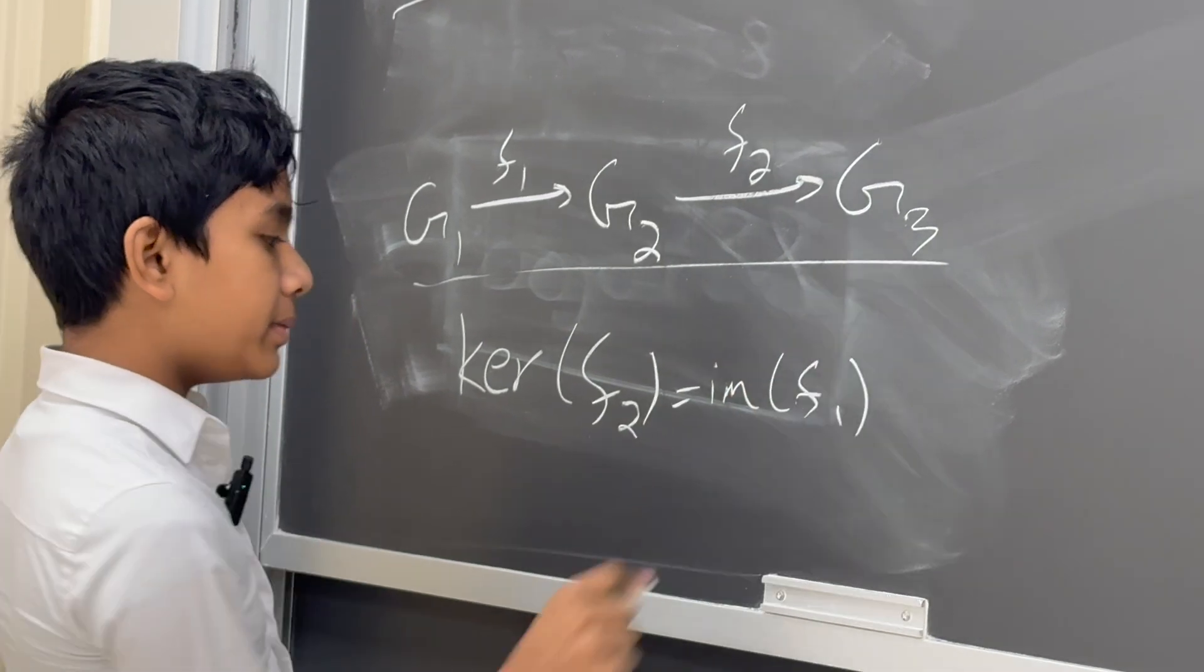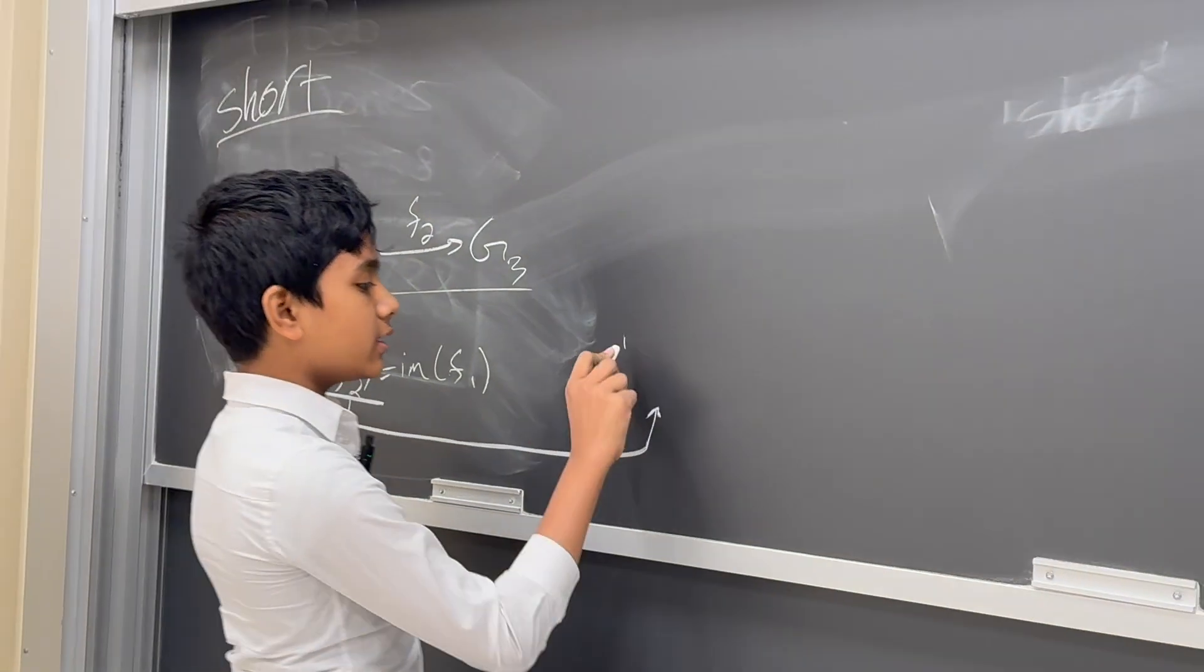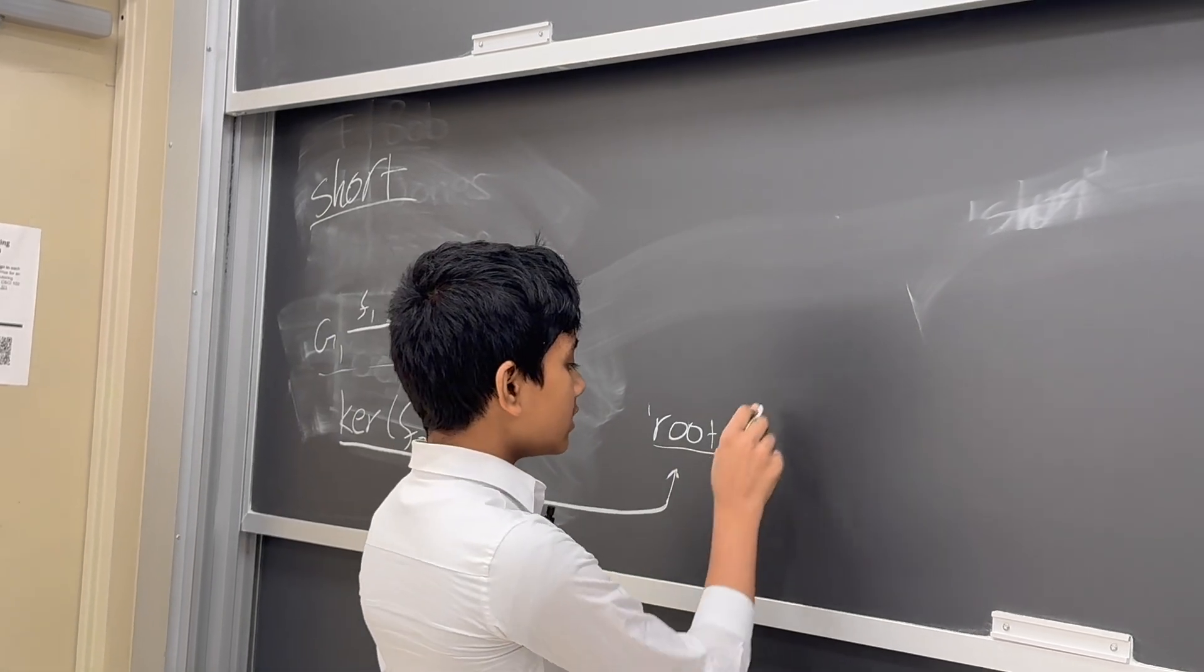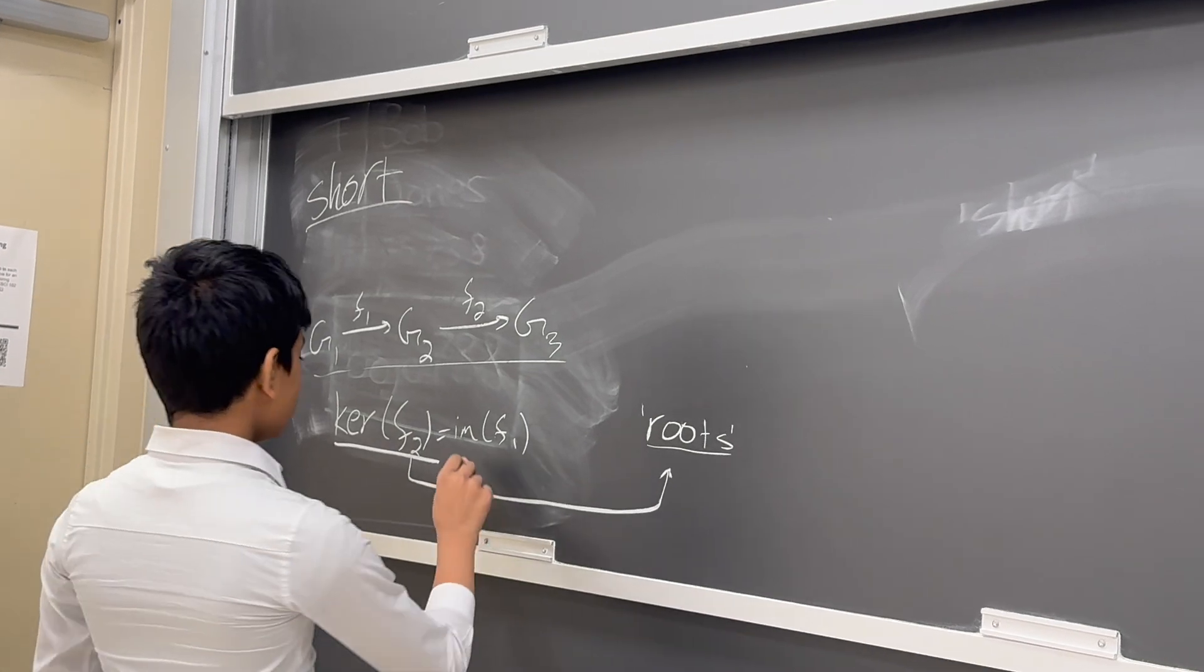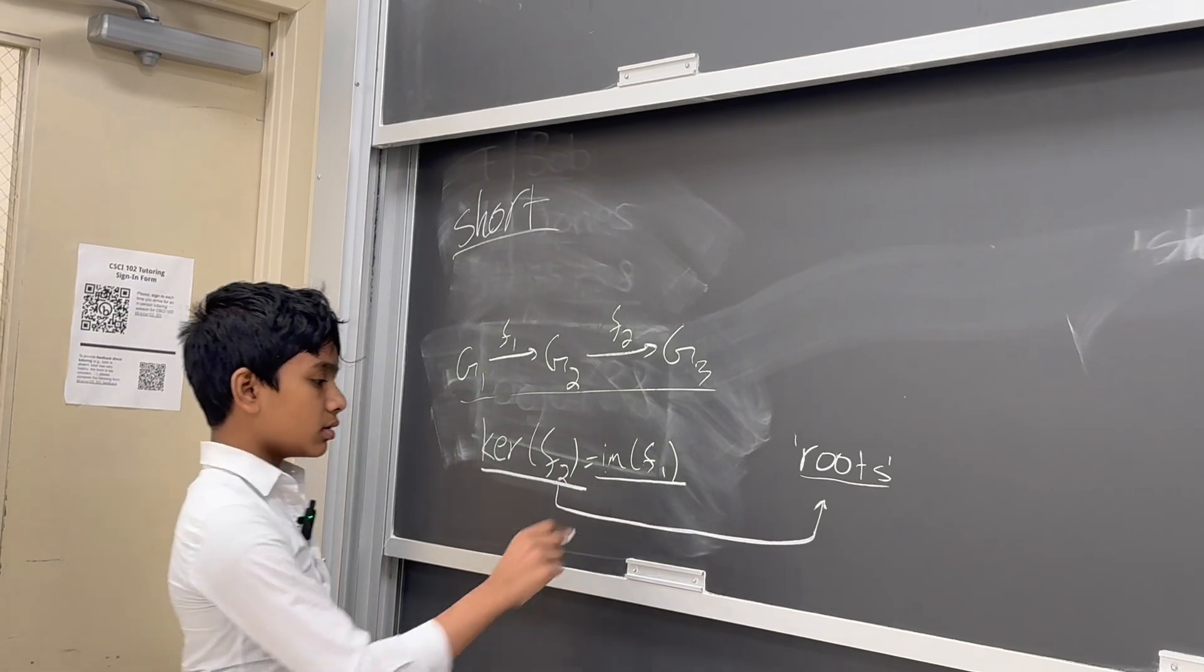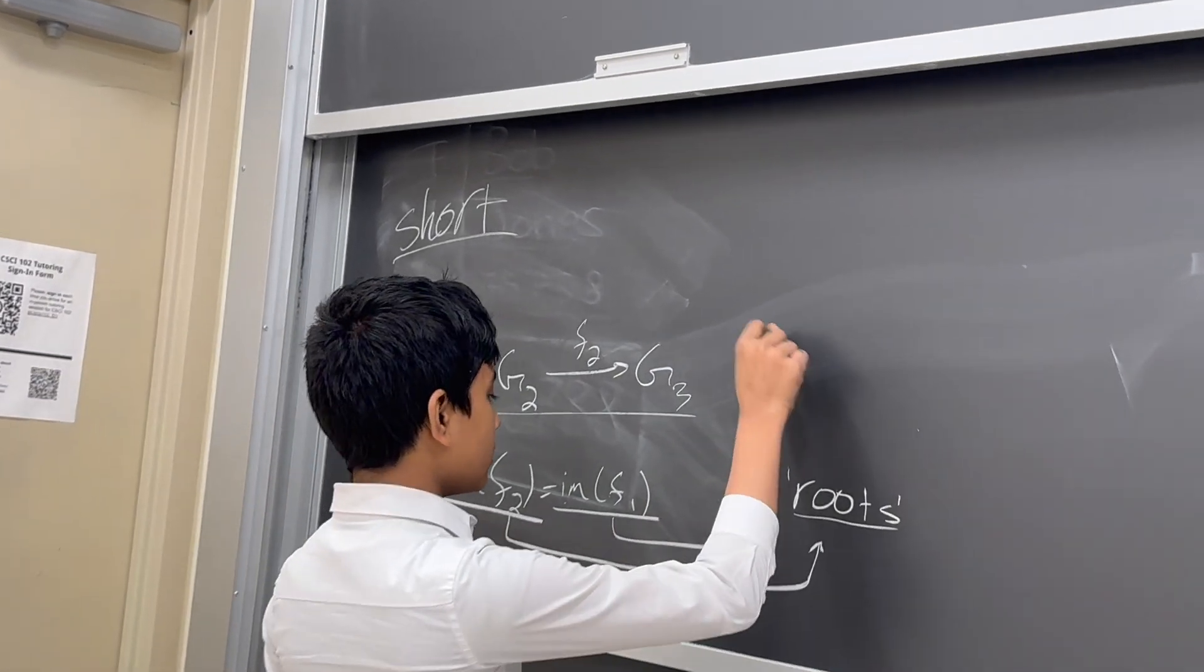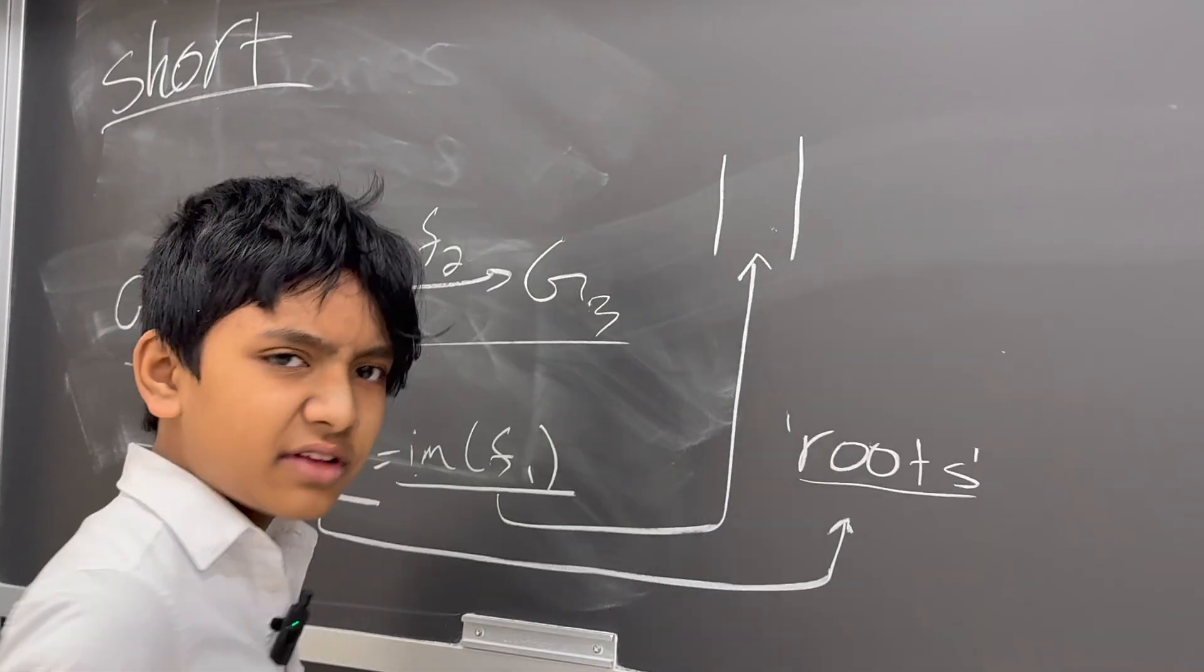Those terms might be unfamiliar, so you can say that a kernel is kind of like the root of a function, i.e., what values does the function map to 0? So the image of f1 can be thought about in a similar way.